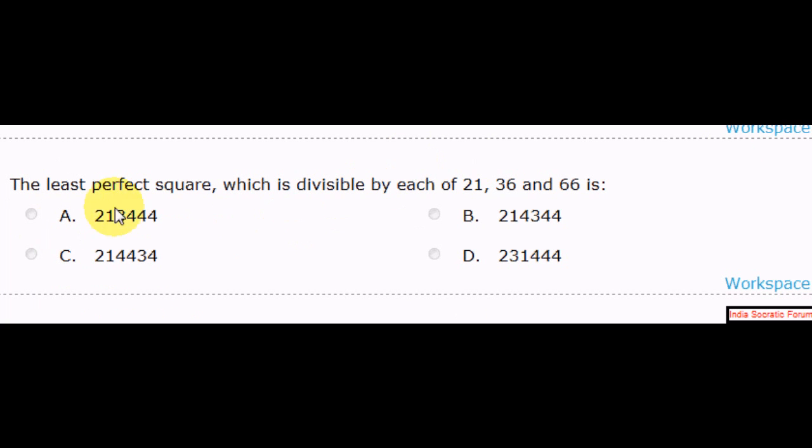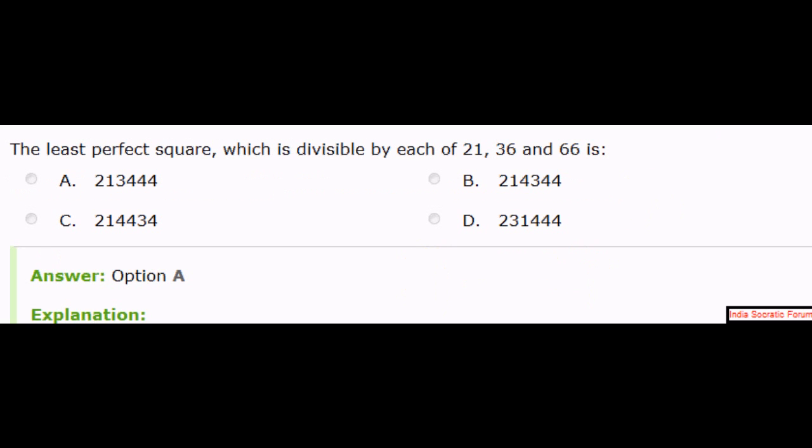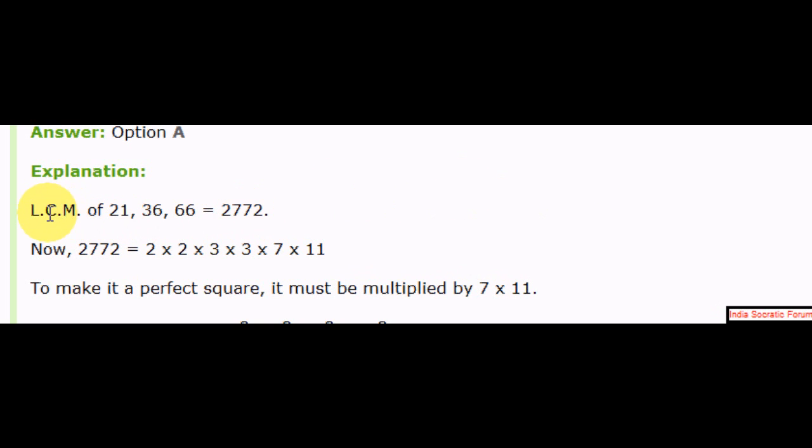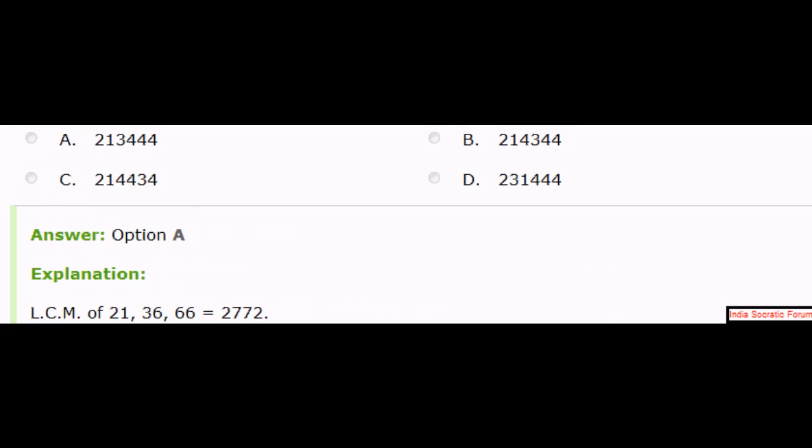Okay. The least perfect square which is divisible by each of these numbers. Remember, the least perfect square. Which one is that? It has to be divisible by all these numbers. What should we use? The answer is option A. How did we get it? Simple. Take the LCM of all these numbers. Take the LCM of all these three numbers which needs to be divisible by. We found the LCM as 2772. Factorize them. So you see 2 into 2, 3 into 3, and only left people are 7 and 11. To make it a perfect square, what do you have to do? Multiply by 7 and 11, just 7 and 11. That makes it a complete square in all numbers. When you multiply that, the answer is 213444.